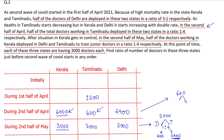We distribute 600 doctors between Kerala and Delhi in a ratio of 1:4. One-fifth of 600 is 120, and four-fifths of 600 is 480. So 120 doctors are transferred to Kerala. After adding those 120 doctors, the number of doctors in Kerala becomes 6000, so 6000 minus 120 equals 5880 doctors in Kerala during the first half of April.